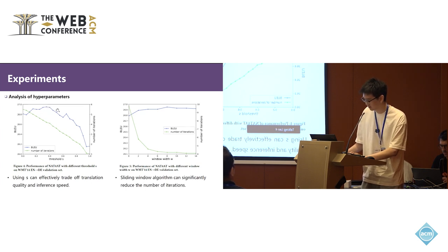However, when S is bigger than 0.4, our method will retain some wrong tokens predicted by NAT mode, so the performance decreases. Figure 5 shows that our sliding window algorithm can significantly reduce the number of iterations.